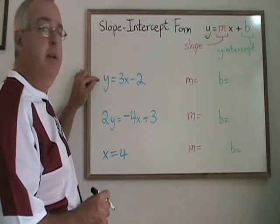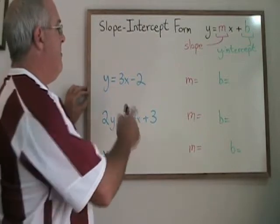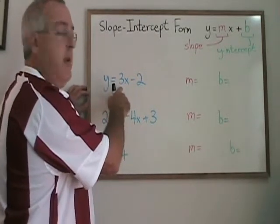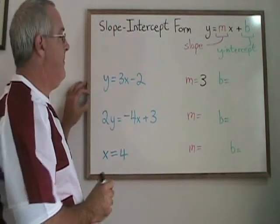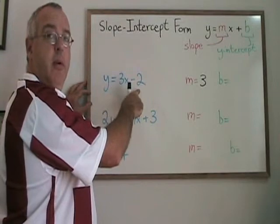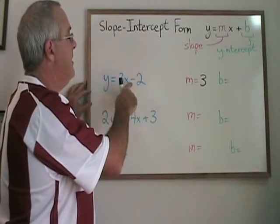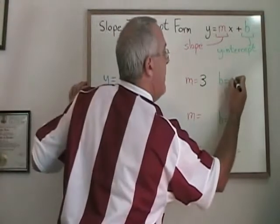In the first equation, the y is already isolated to the left of the equal sign. The m in this case is the 3, so the slope of this straight line is 3. The b is the constant term with its sign. So because we have minus 2, the y-intercept for this straight line is going to be negative 2.